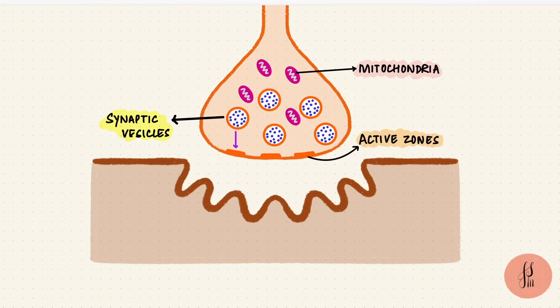What makes this fusion happen is calcium, so on the membrane there are also voltage-gated calcium channels. This whole thing forms our presynaptic terminal.